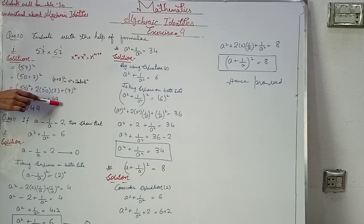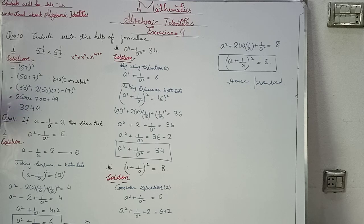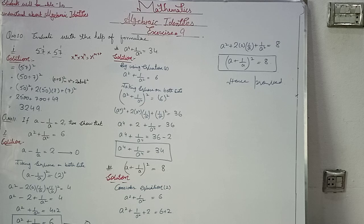Adding all these we get 3249. Similarly, for the second and third parts, you have to use the same identity: (a + b)² = a² + 2ab + b². Implement this identity on those parts and you can easily solve them.